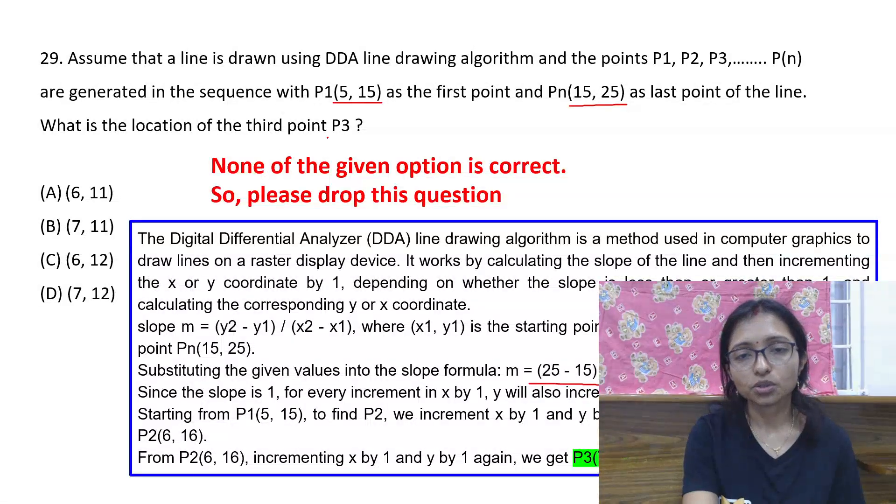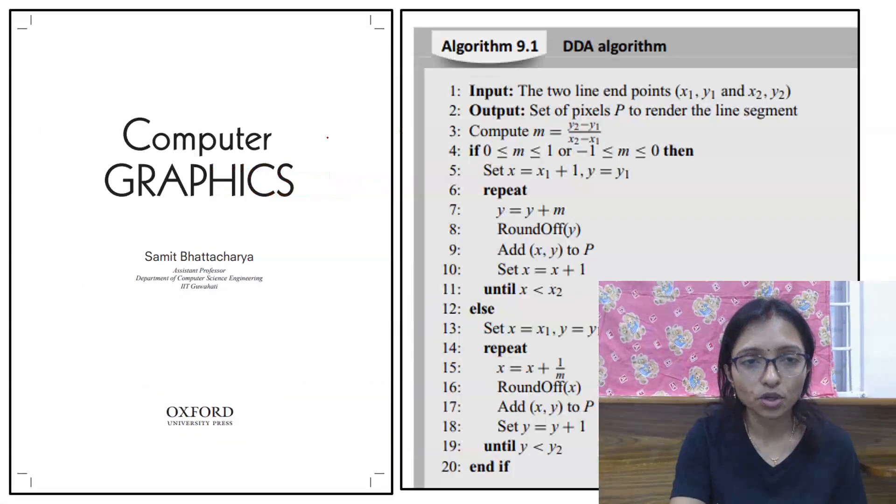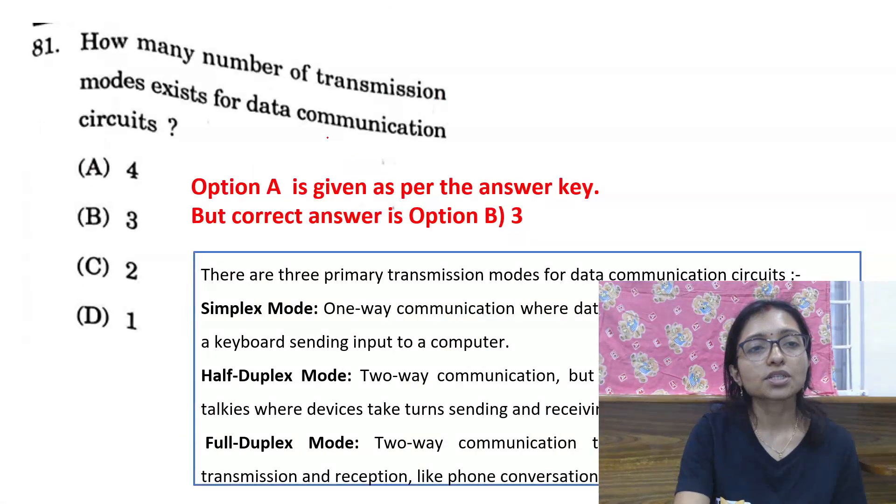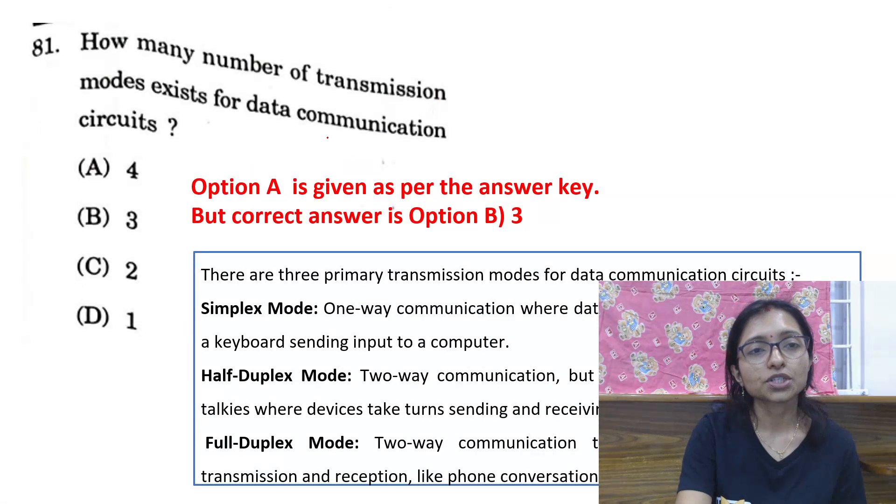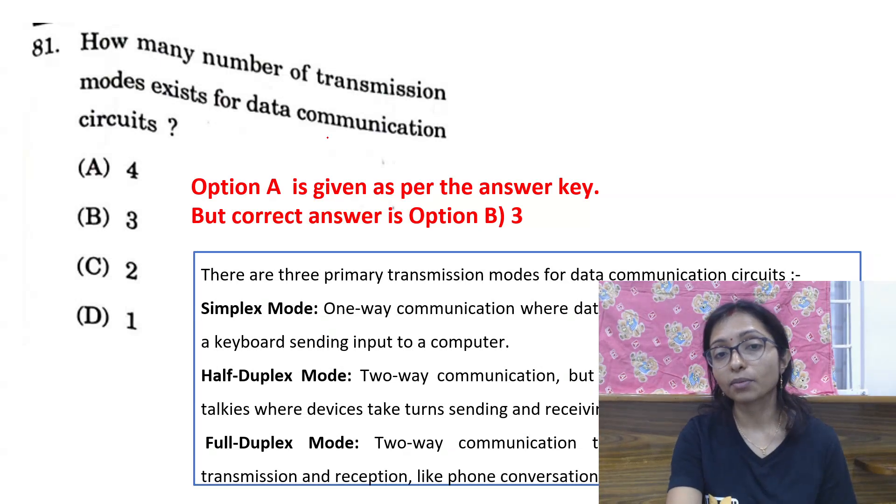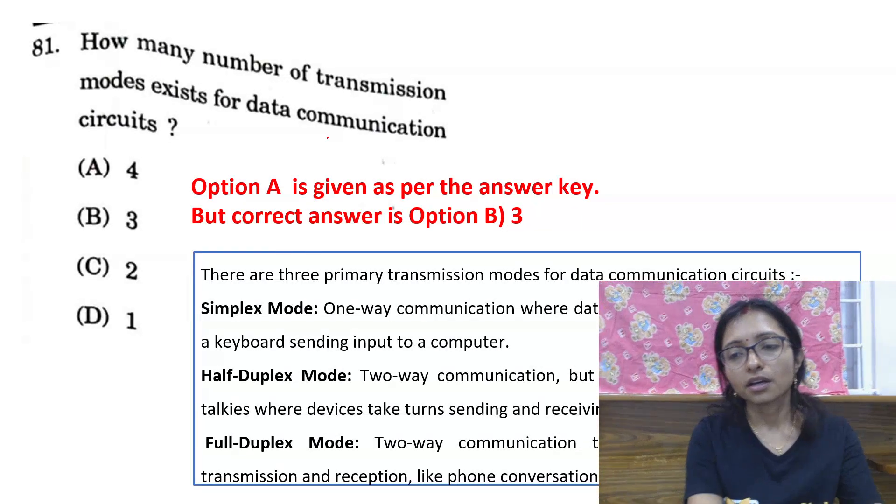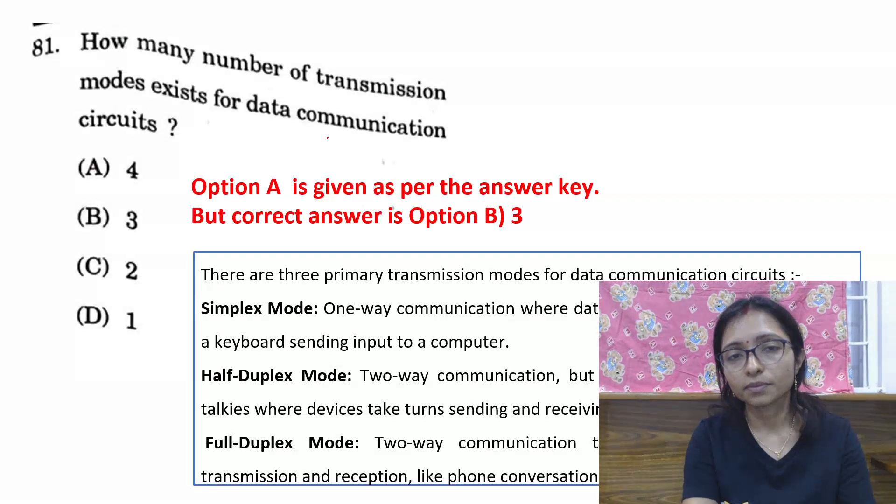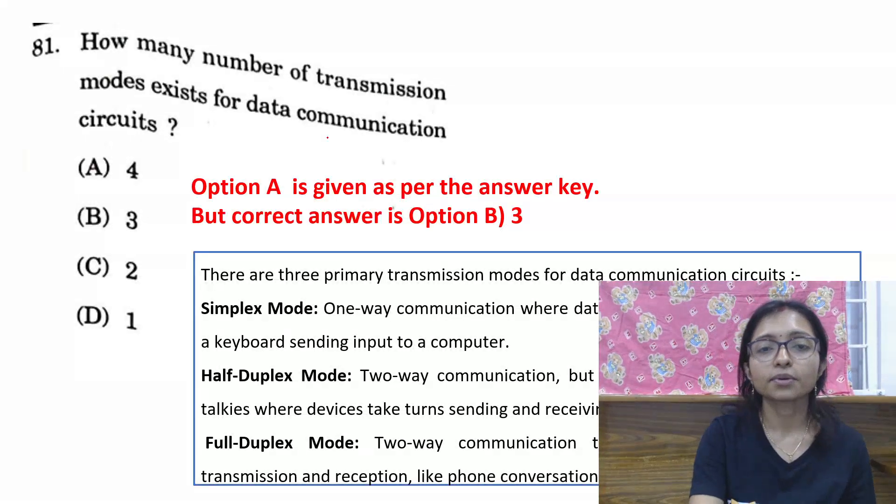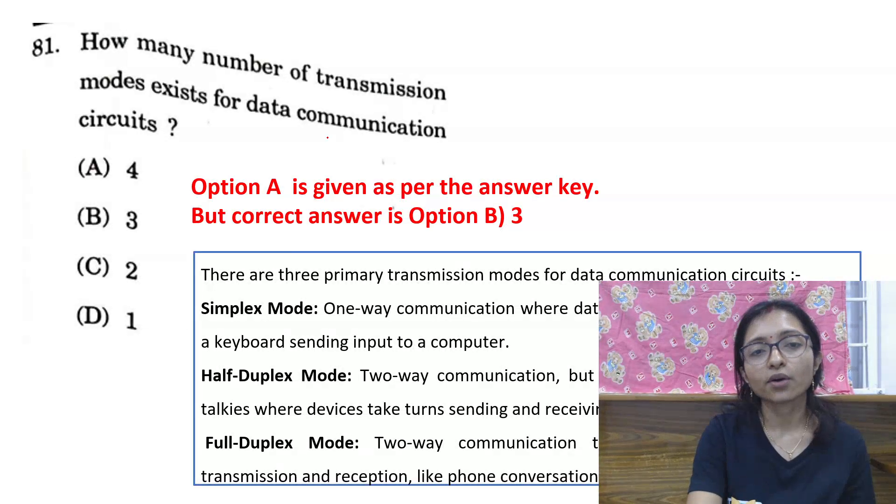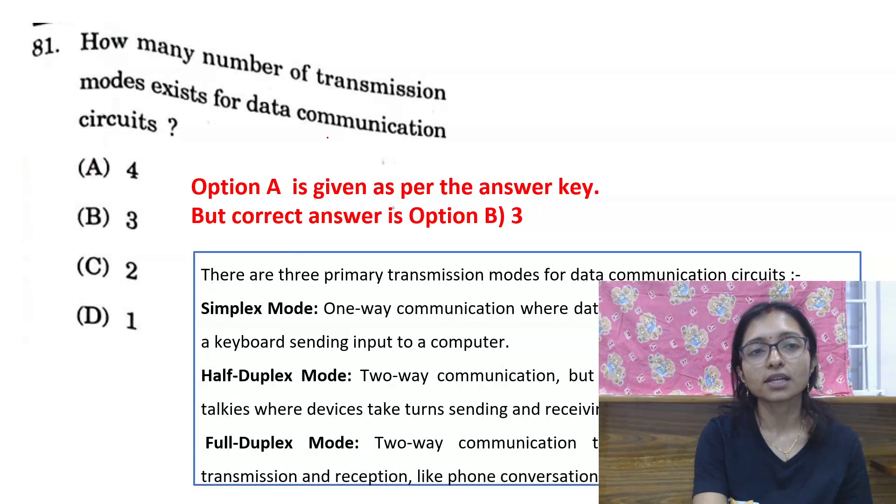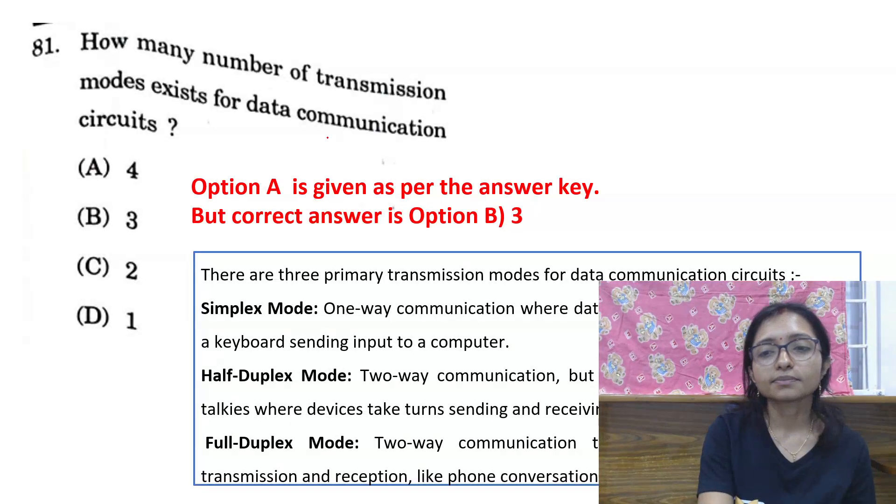The next question is the number of transmission modes. This is actually question number... may not match because I am taking Group C questions. According to that, the question number you can check according to the C group. The question is 81.